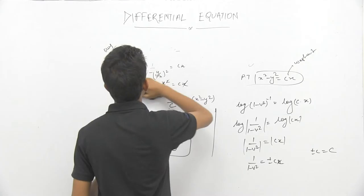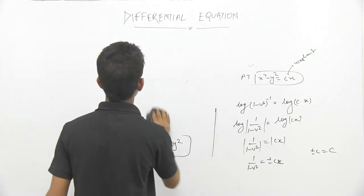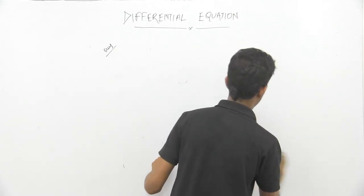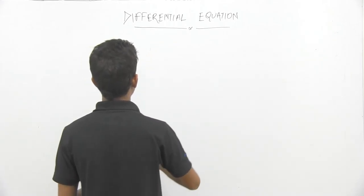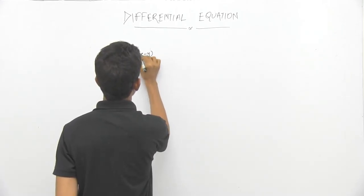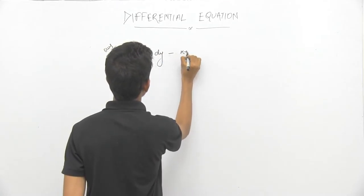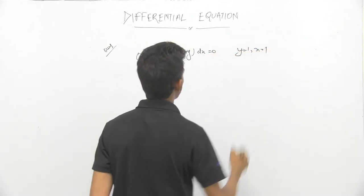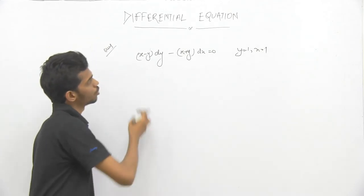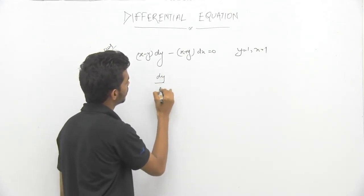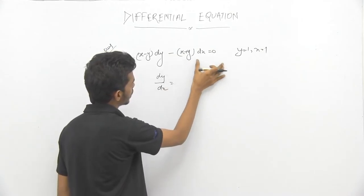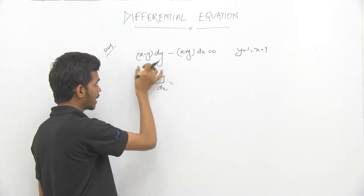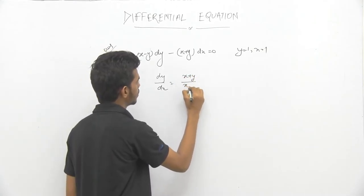Now the next question: (x - y)dy - (x + y)dx = 0, and we have to find the particular solution given y = 1 when x = 1. Rearranging: (x - y)dy = (x + y)dx, so dy/dx = (x + y)/(x - y).